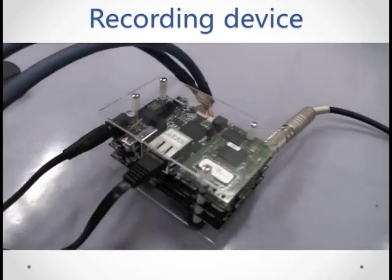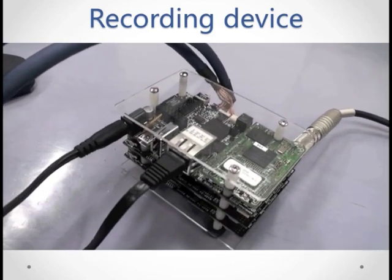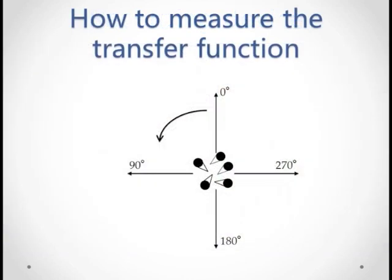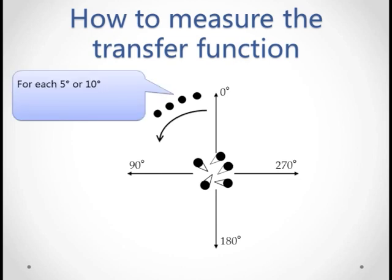This is the RASP recorder, one kind of recording device that you can use. In general, we play and record the TSP many times, 360 degrees around the microphone array. For every 5 or 10 degrees, you would place a loudspeaker and record the TSP.